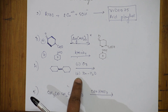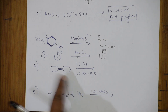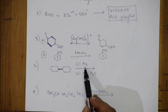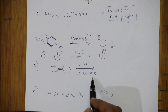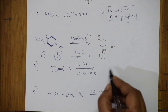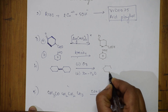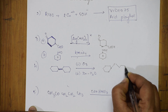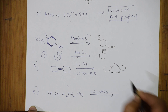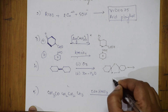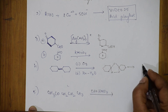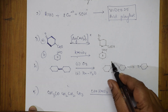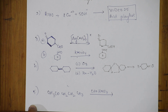In the fourth reaction, they've given a cyclic compound treated with ozone and then zinc and water — this is ozonolysis. The ozone adds across the double bond in the ring, the ring breaks, and then further cleavage occurs. When this breaks, you get a double bond to oxygen (aldehyde), resulting in a ring-opened product.